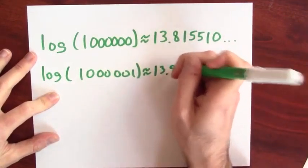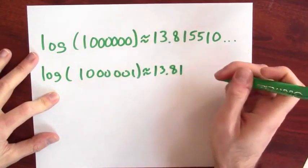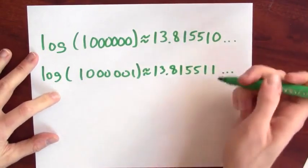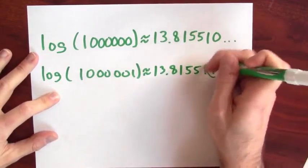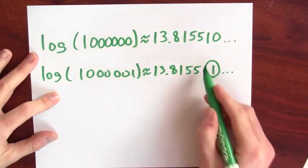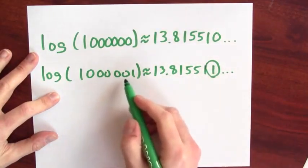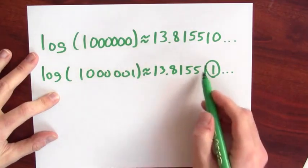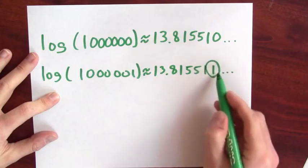And yeah, log of a million and 1, it's about 13.815511. What's being affected here is in the millionths place after the decimal point, the sixth digit after the decimal point, because it's being affected like a change of 1 over a million. I'm changing the output by about a millionth.